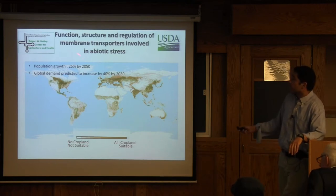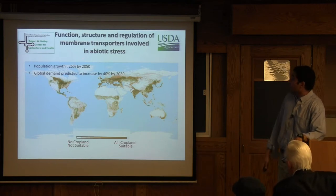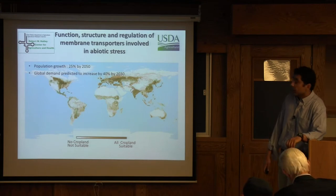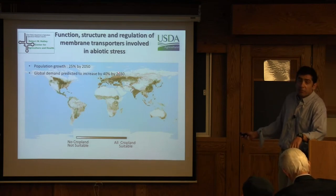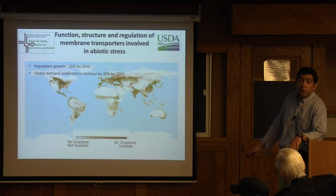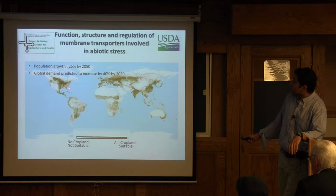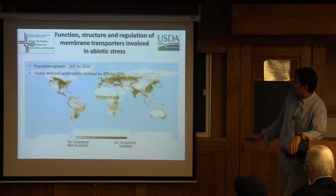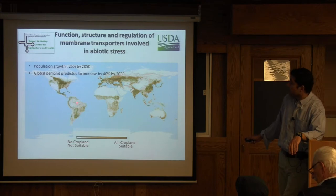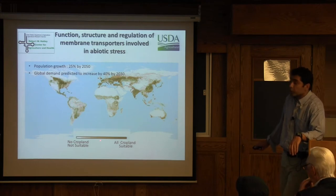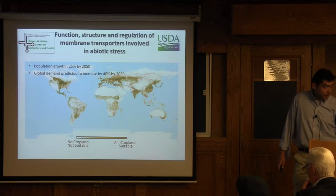However, when you take into account that by 2050 our population is increasing by about 25%, and in about 20 years or so we need to increase our production by 40%, it's obvious that we have to start thinking about moving into these marginal soils and increasing the productivity that is currently taking place in soils that are not suitable for agriculture.